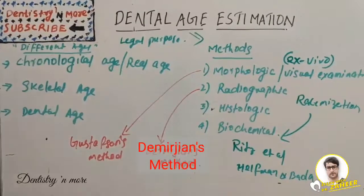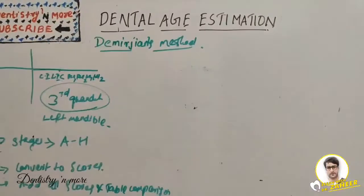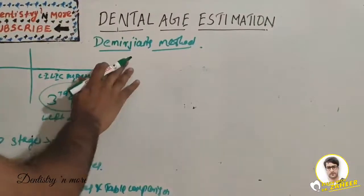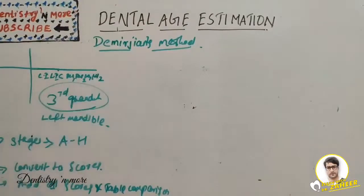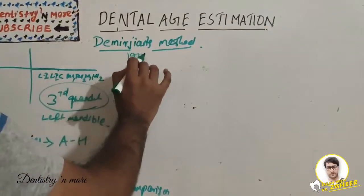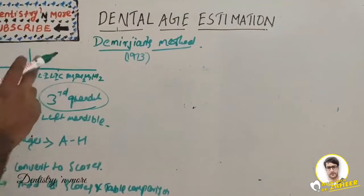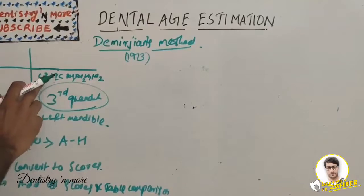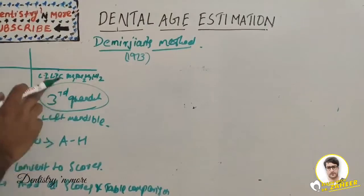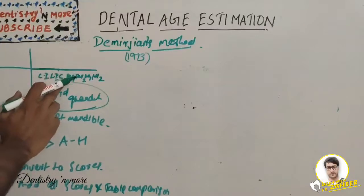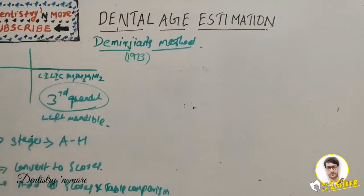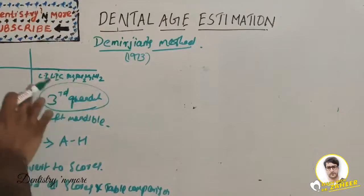Now let's focus mainly on Demirjian's method and Gustafson's method. In the radiographic method, the most common one is Demirjian's method, which started in 1973 by a group of people. It uses the seven teeth in the left side of the mandible - that is the third quadrant teeth: central incisor, lateral incisor, canine, first premolar, second premolar, first molar, and second molar.